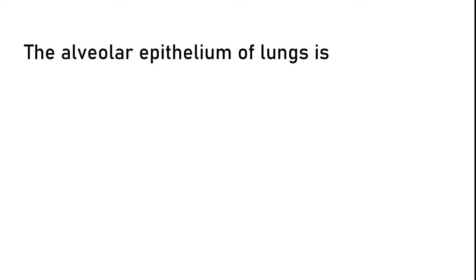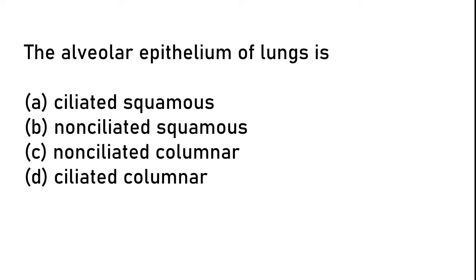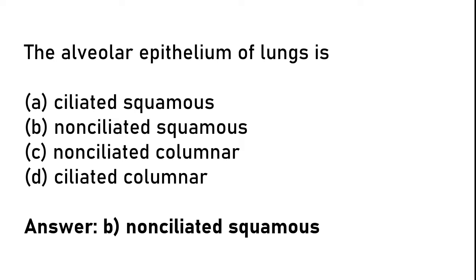The alveolar epithelium of lungs is: (A) ciliated squamous, (B) non-ciliated squamous, (C) non-ciliated columnar, (D) ciliated columnar. The correct answer is option B: the alveolar epithelium of lungs is non-ciliated squamous.